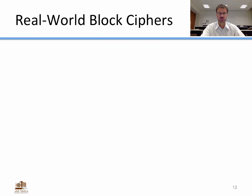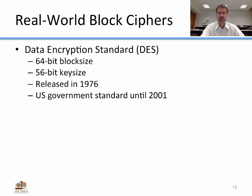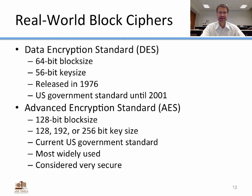Some real-world block ciphers: the Data Encryption Standard, DES, was a U.S. government standard until 2001. Released in 1976, it uses a 64-bit block size and a 56-bit key size. DES was replaced by AES, the Advanced Encryption Standard, which uses a 128-bit block size and key sizes of 128, 192, or 256 bits. AES is the current U.S. government standard, the most widely used symmetric key algorithm today, and is considered very secure with no significant known weaknesses.